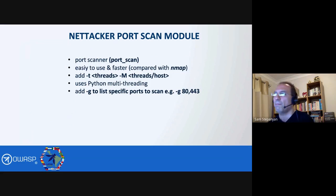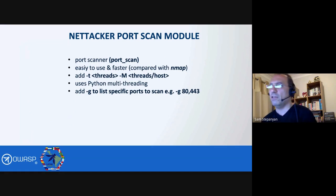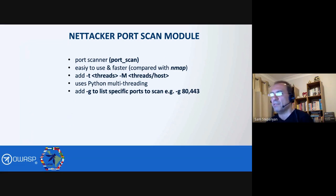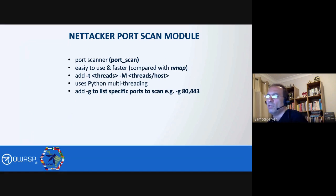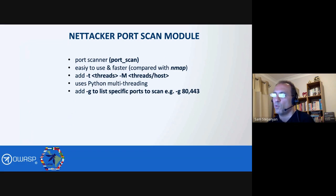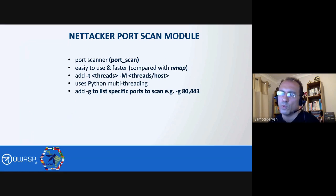The most popular module in Nettacker is probably the port scanner. It's quite easy to use and much faster compared with Nmap — since discovering Nettacker, I've stopped using Nmap. It's multithreaded: you can add -t for extra threads and -m for extra threads per host. You can also add -g to scan for specific port numbers. If you don't specify -g with a specific port number, Nettacker will scan for the 1000 most popular ports, similar to Nmap.